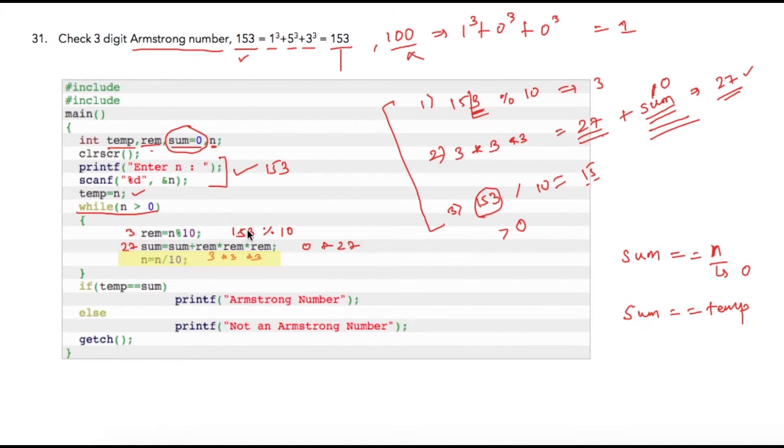In the next statement we are getting away with 3, so we will have only 15. At the end of this statement n equal to n divided by 10, we will have n as 15, because 153 divided by 10 will give us 15. Once this statement is completed, our n is 15 now. Compiler will check whether 15 is greater than 0, which is true, so compiler will go inside of our while loop.